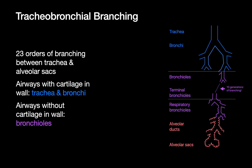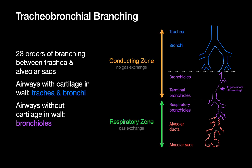The tracheobronchial tree undergoes 23 orders of branching between the trachea and the alveolar sacs. The more proximal airway branches contain cartilage within their walls — we call these airways bronchi. The more peripheral airways don't have cartilage in their walls, and we call these bronchioles. Something interesting happens to the more peripheral bronchioles: once you've reached around 17 orders of branching from the trachea, the bronchioles start having little patches of alveoli sporadically along their walls, allowing some degree of gas exchange before you've even reached the alveolar ducts and alveolar sacs. These bronchioles we refer to as respiratory bronchioles.